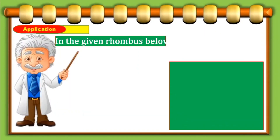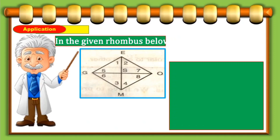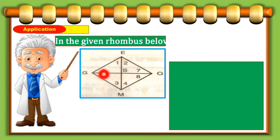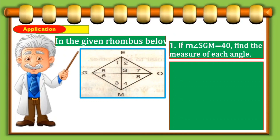Now let's have some application. In the given rhombus GEOM, we have angles labeled 1, 2, 7, 8, 4, 3, 6, and 5. The intersection of diagonals EM and GO is point S. First problem: if the measure of angle SGM is 40 degrees, find the measure of each angle. Angle SGM is also named angle 6, so angle 6 equals 40 degrees.